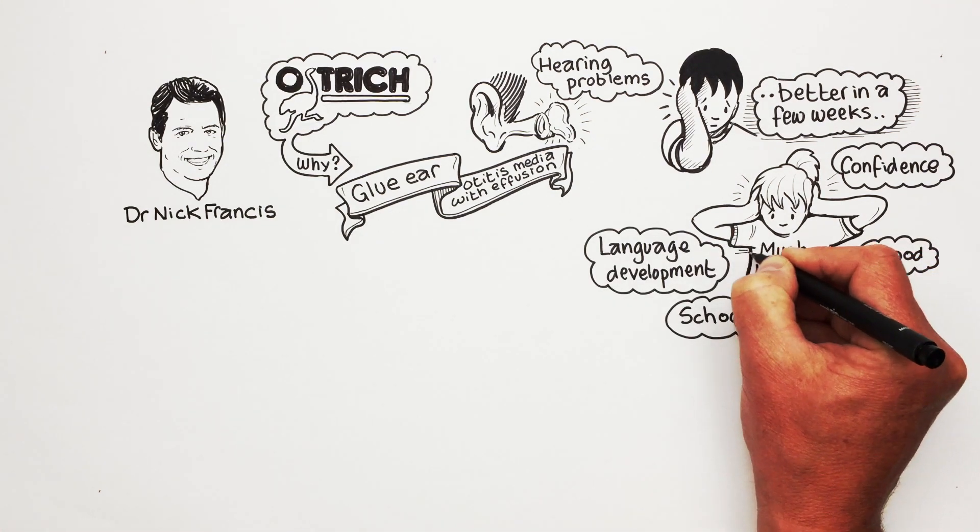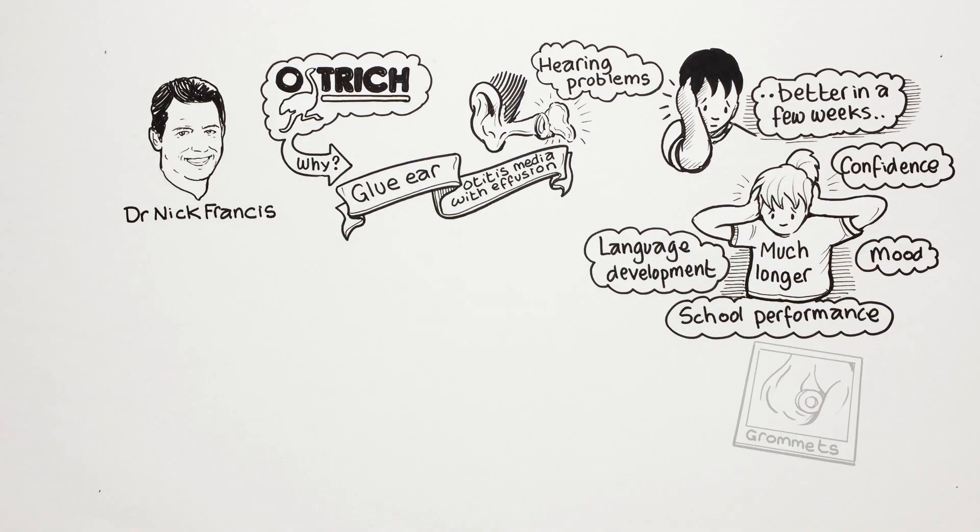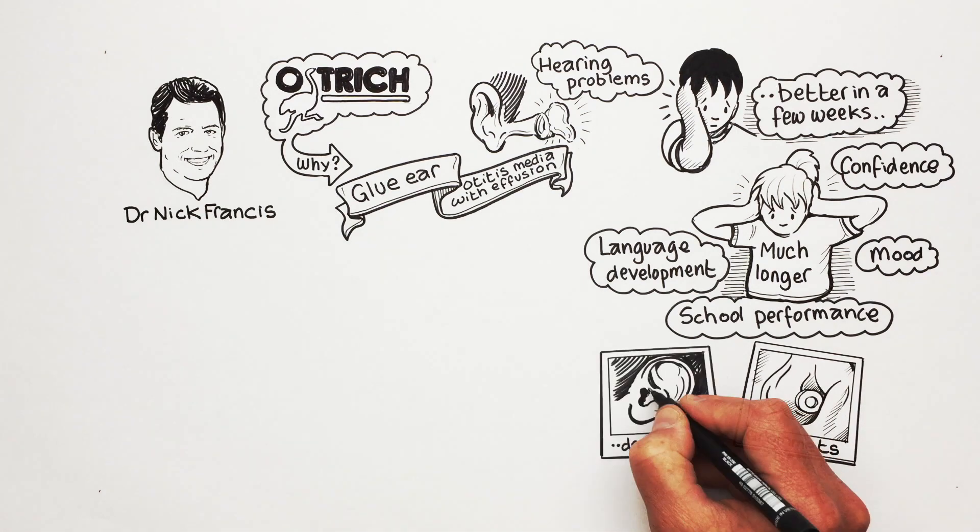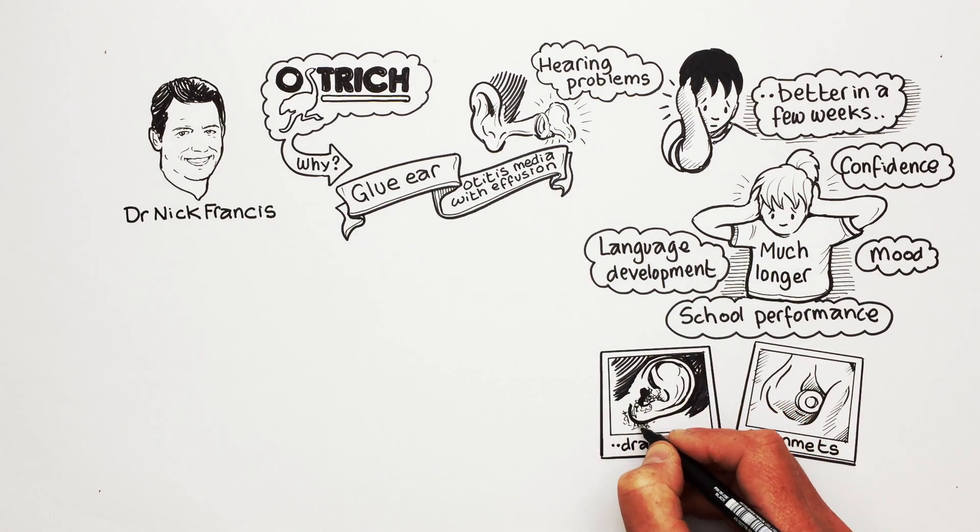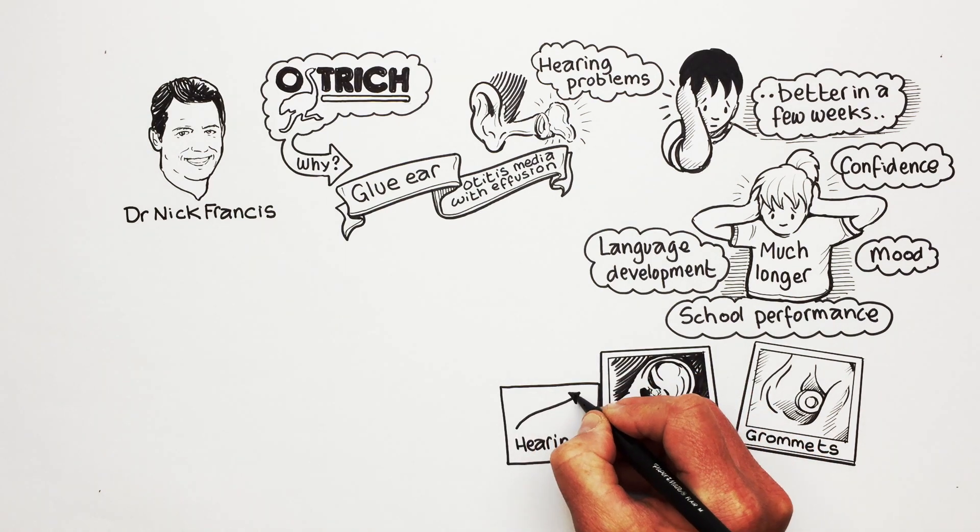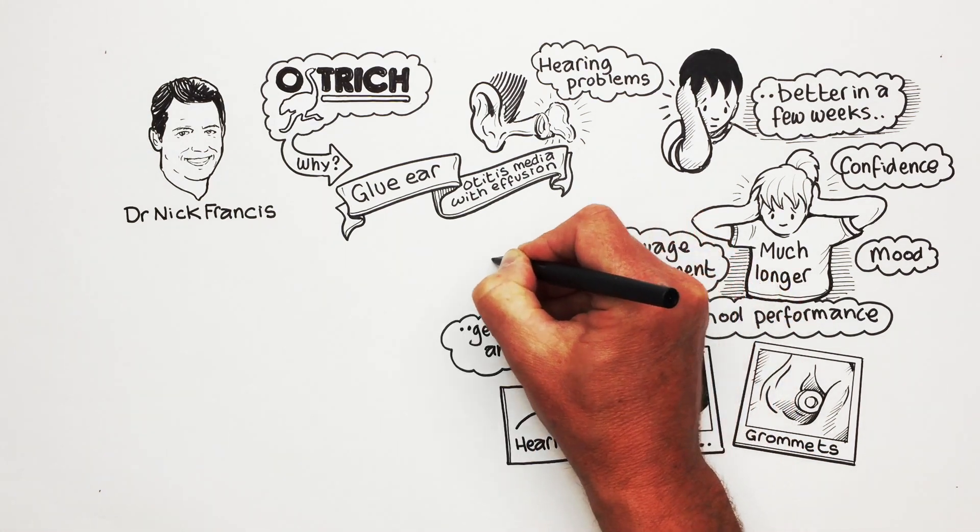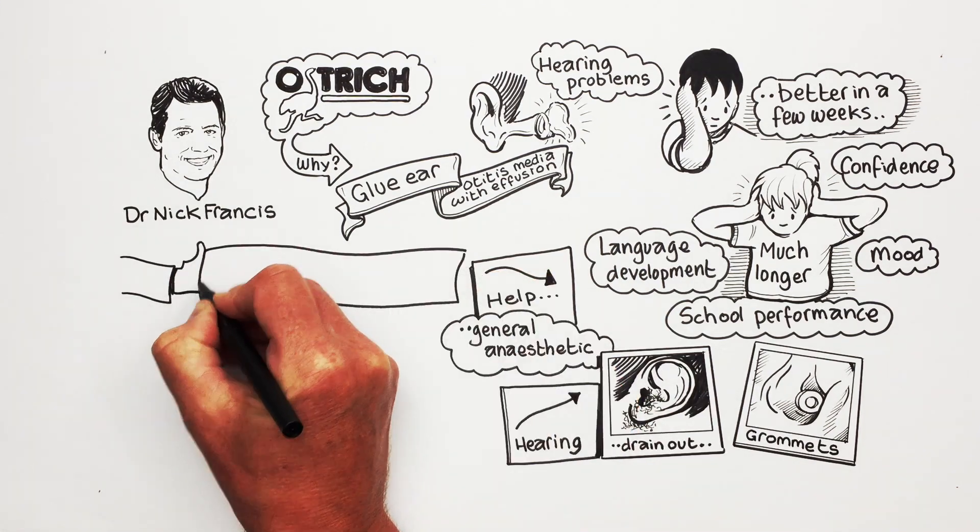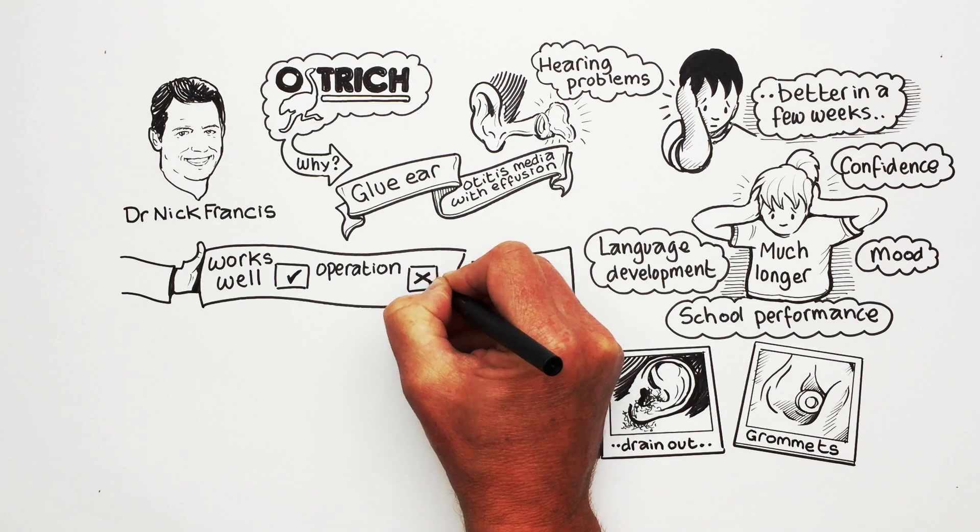Most children with longer lasting hearing loss from glue ear are offered surgery to put small tubes, called grommets, through the eardrum which allows the glue stuck behind the eardrum to drain out. This improves hearing but involves a general anaesthetic and is sometimes only helpful for a short time. A treatment that works well and does not involve an operation would be of great benefit.